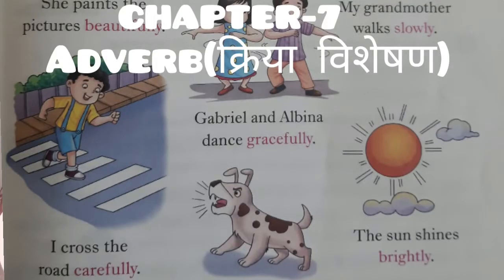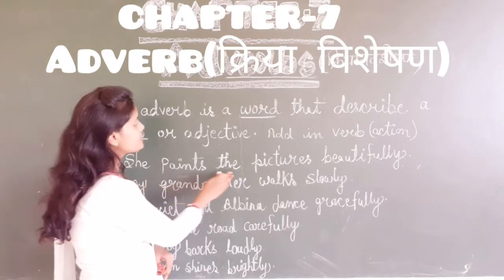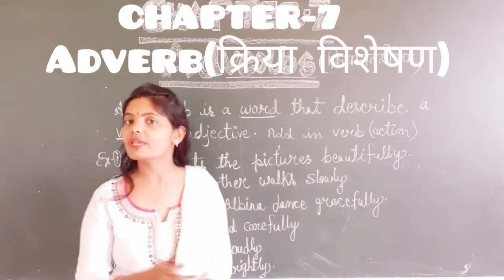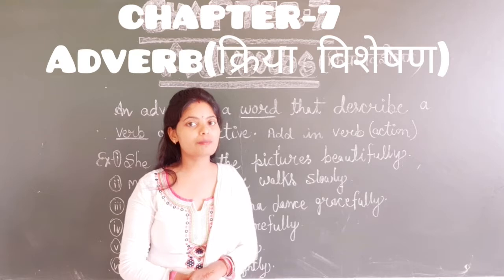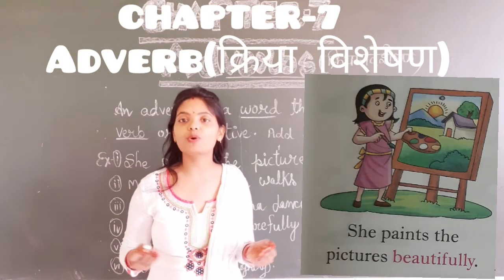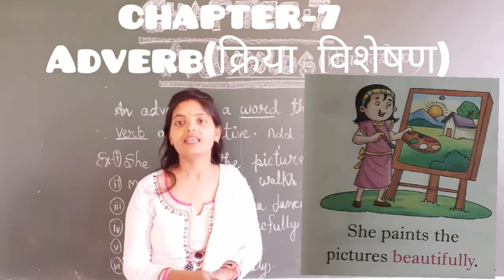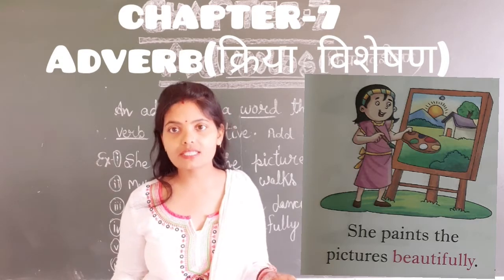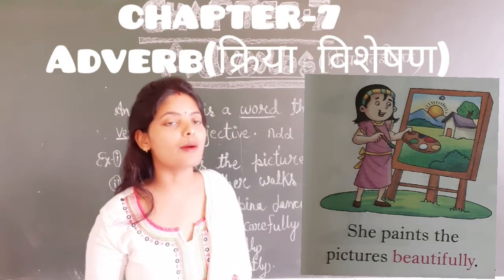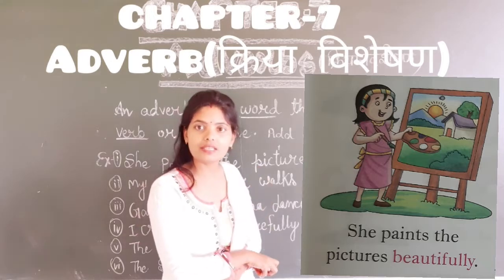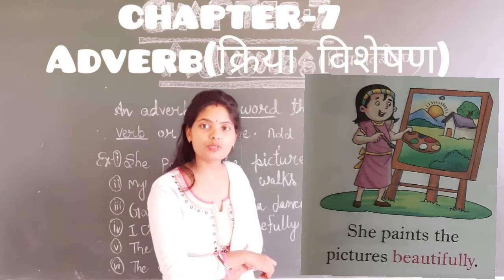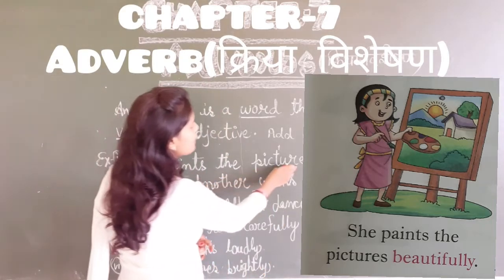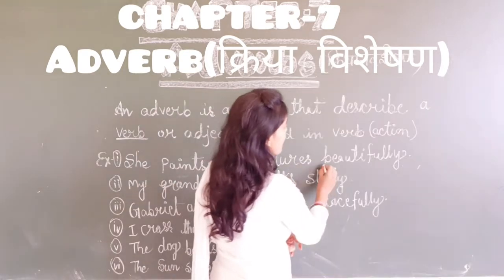Let's see some examples. She paints pictures beautifully. How does she paint? She paints — and how she is painting depends on the word beautifully. We are describing how she is painting.